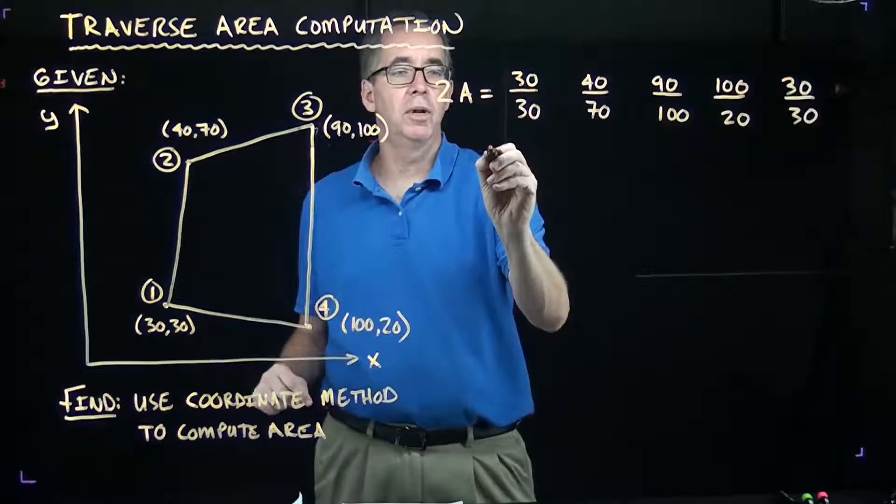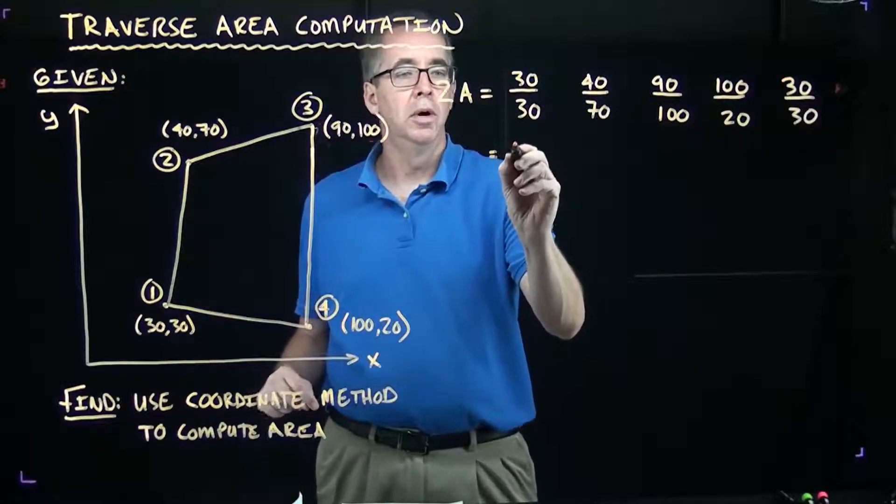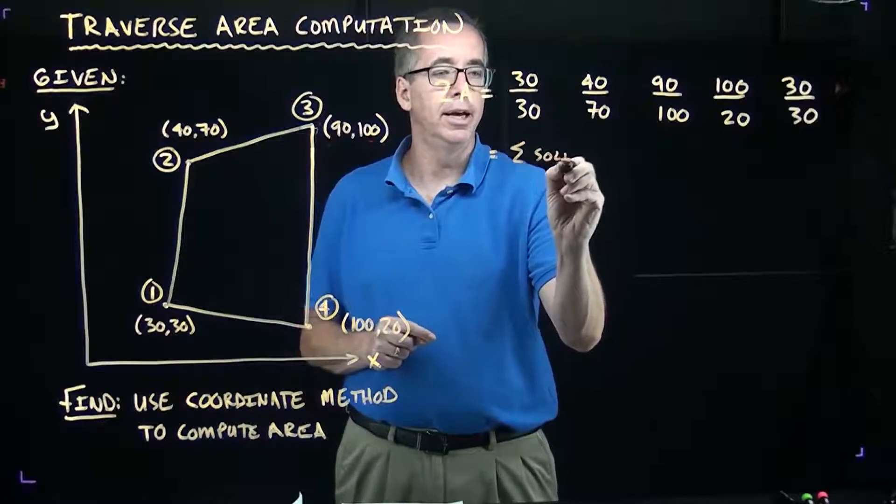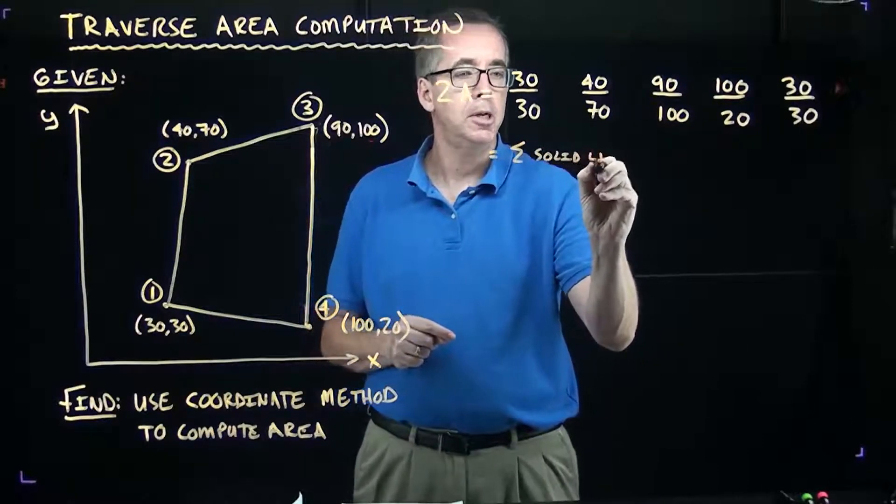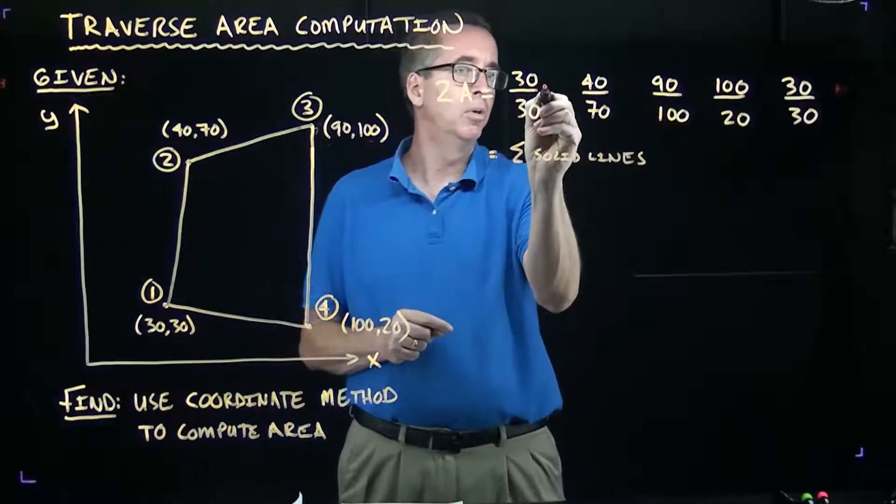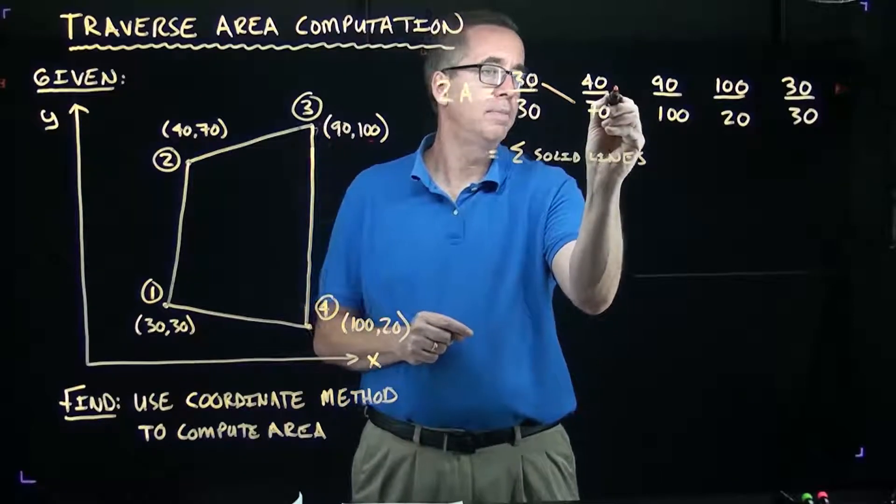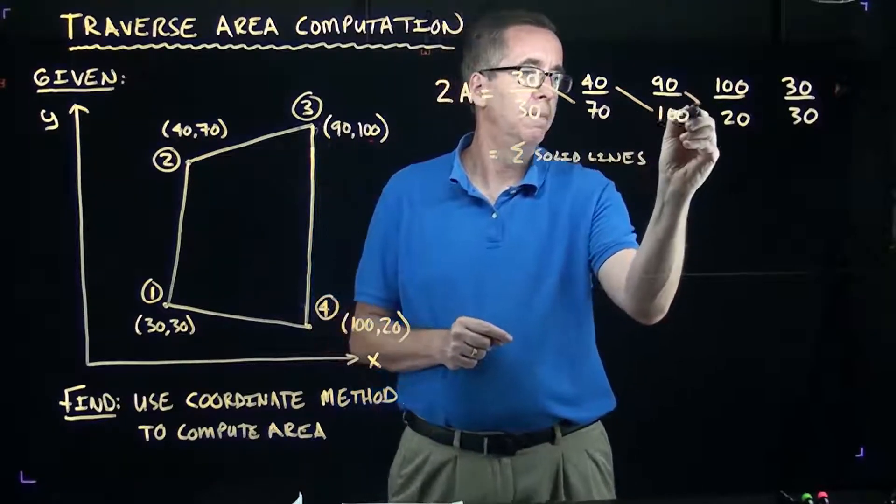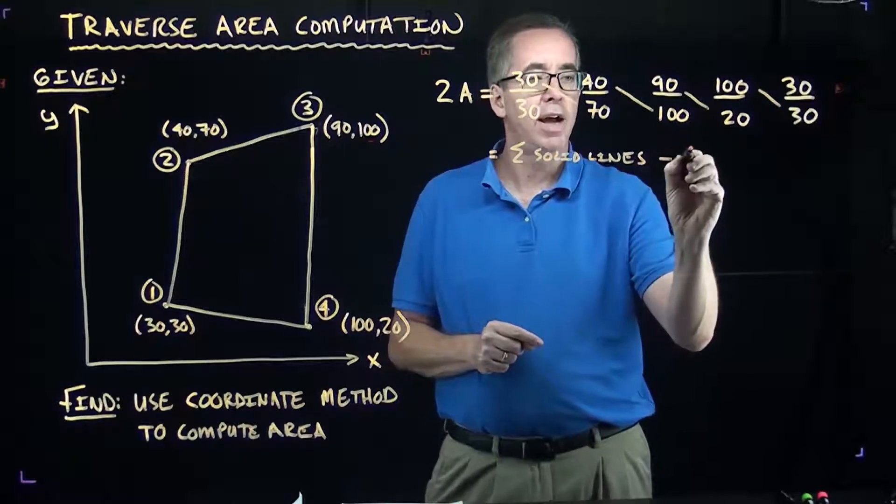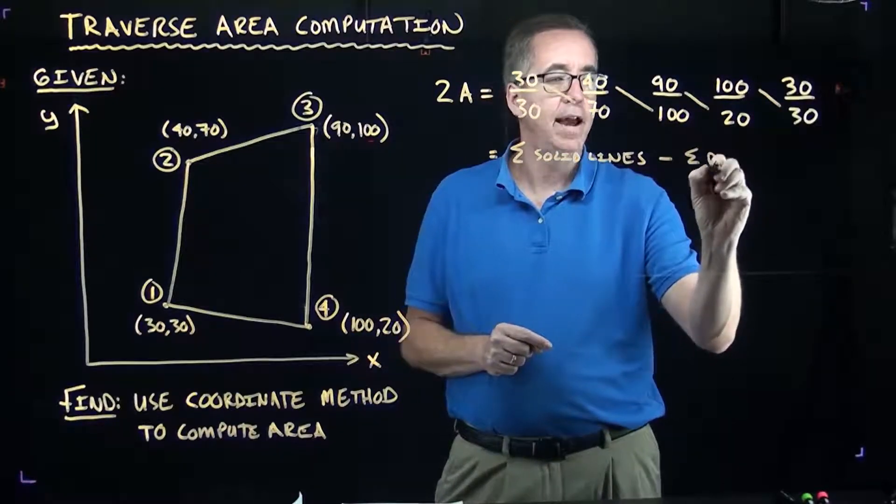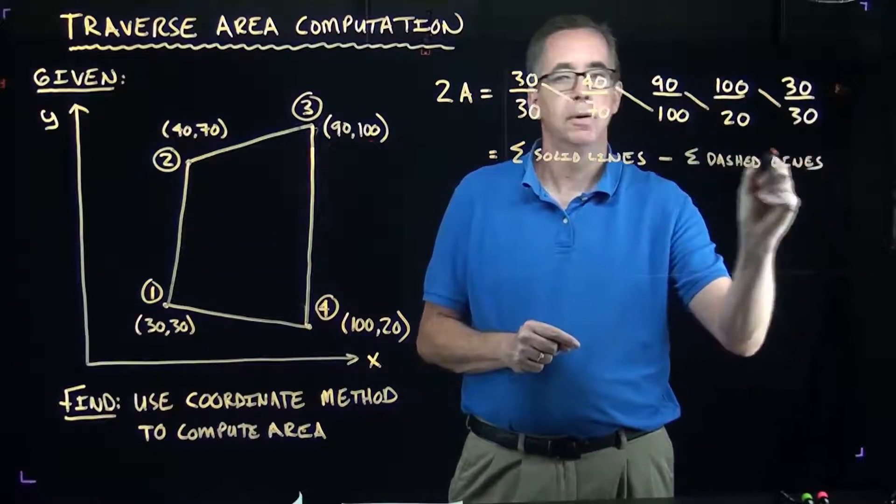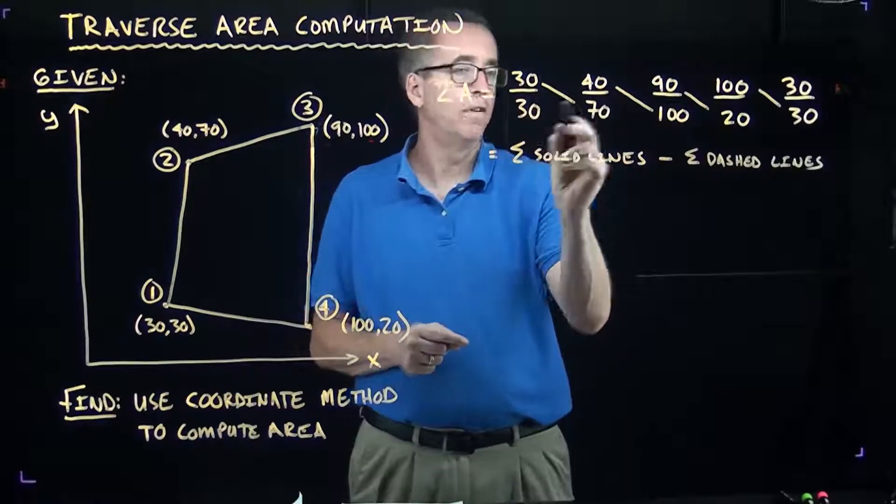Essentially, what we're going to do is go through, and this technique says that you're going to sum all the solid lines. The solid lines will be, we multiply these products out. And then we're going to subtract out the dash lines.